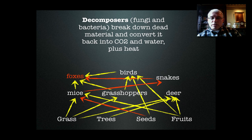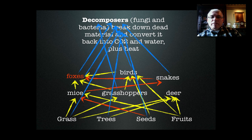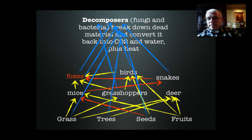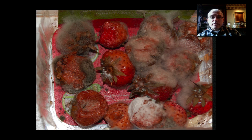Decomposers are organisms — we also know them as fungi and bacteria — that break down dead material and convert it back into carbon dioxide and water, releasing some heat in the process. Everything in this food web will eventually die, producing dead material that will be decomposed. Here are some decomposing strawberries: the organism consuming the energy in these strawberries is a mold, which is a kind of fungus — a very common decomposer in ecosystems.